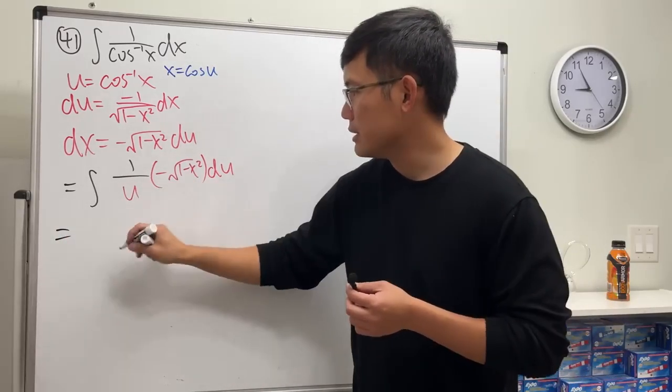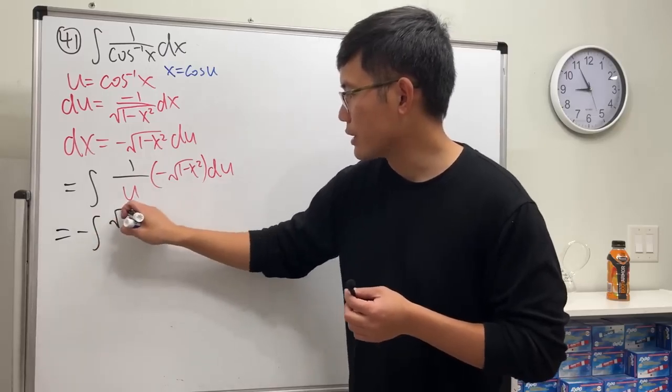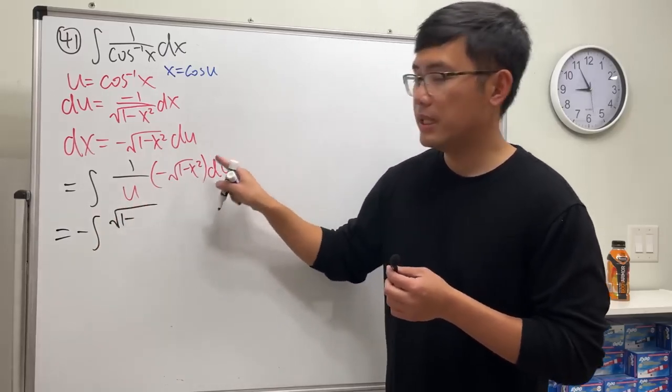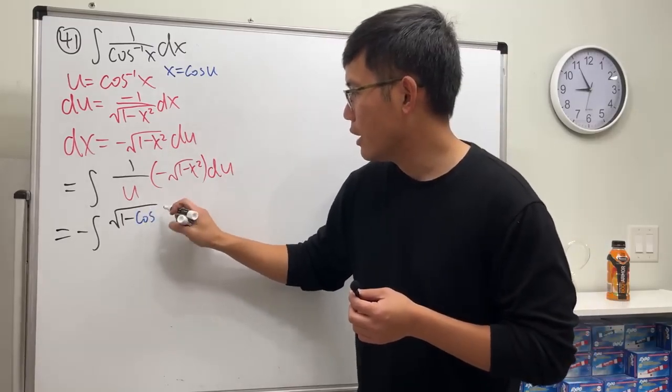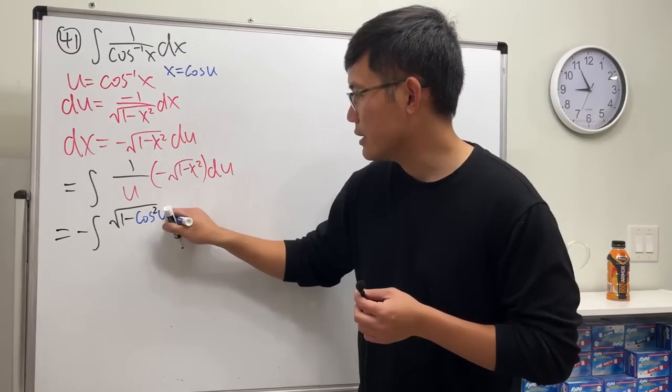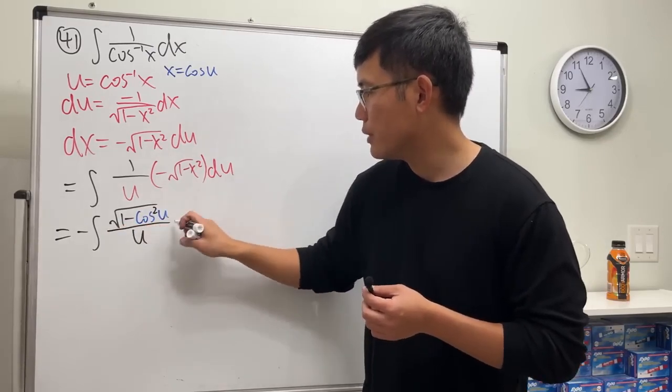this right here becomes negative integral. Let's put the square root on the top. 1 minus x is cosine of u, and then we have the square root, so it's like this. And then divide it by u du.